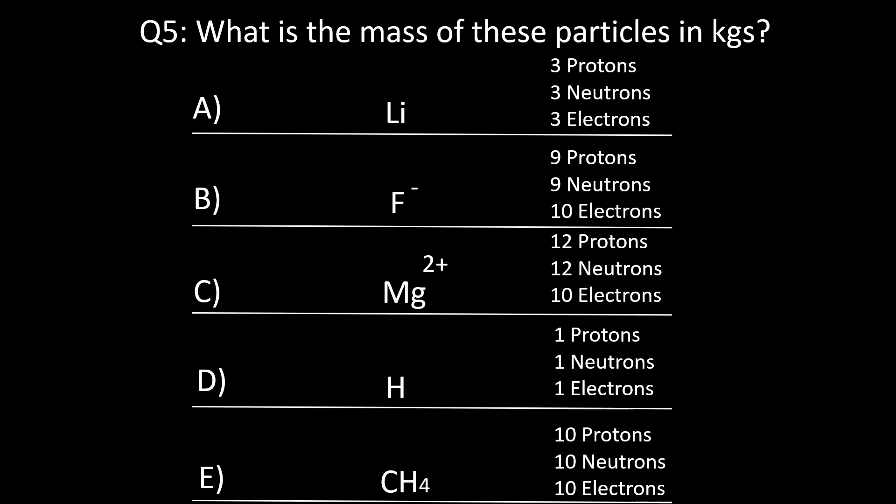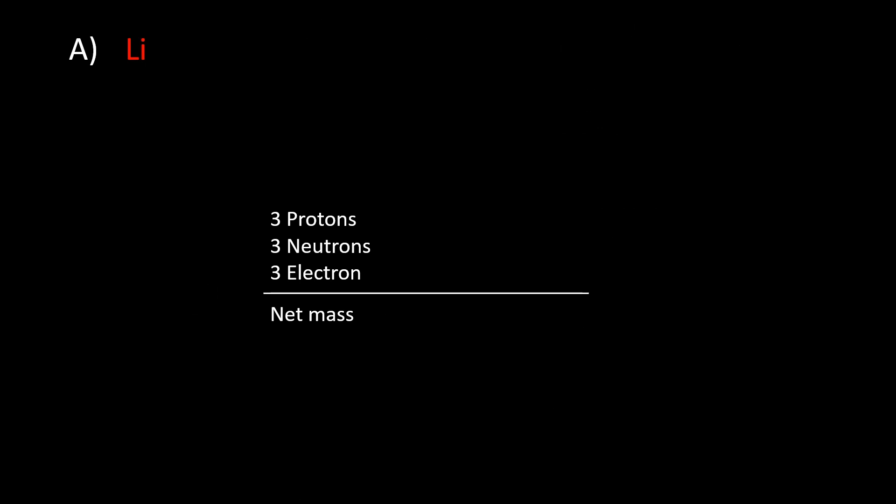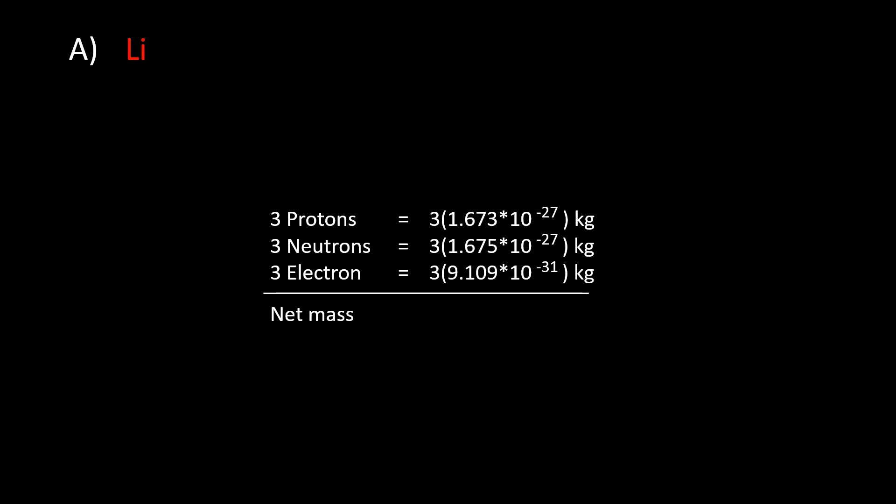Question 5: What is the mass of these particles in kilograms? For atom A, there are three protons, so three times the mass of a proton; three neutrons, so three times the mass of a neutron; and three electrons, so three times the mass of an electron. Multiplying each particle's mass by its count and then summing them, you get a total mass of 1.005×10⁻²⁶ kg.